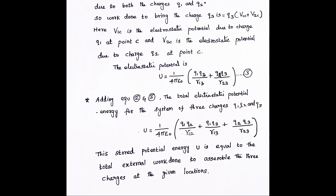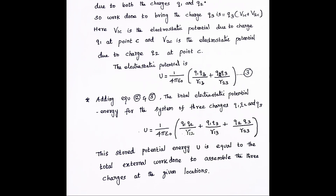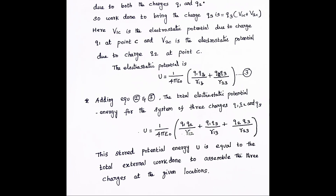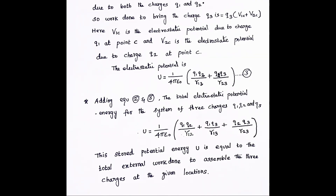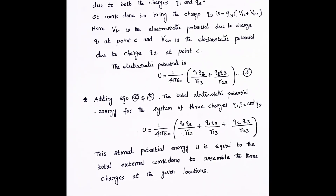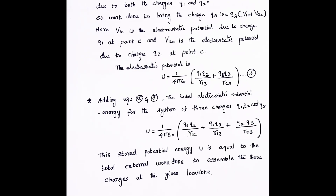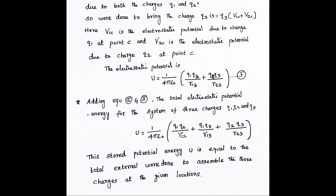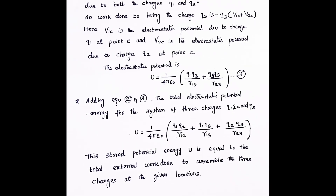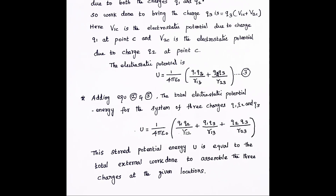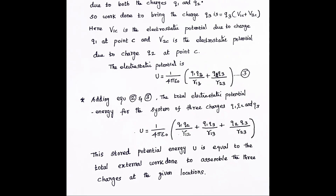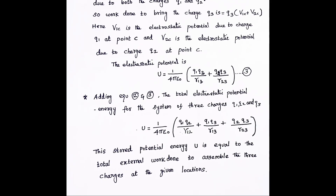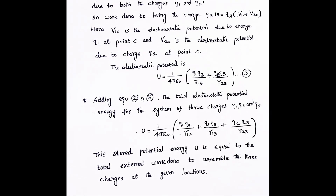Adding equations 2 and 3, the total electrostatic potential energy for the system of three charges Q1, Q2, and Q3 is U = (1/4πε₀)[(Q1·Q2/R12) + (Q1·Q3/R13) + (Q2·Q3/R23)].